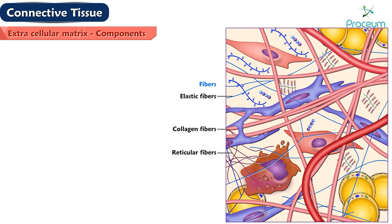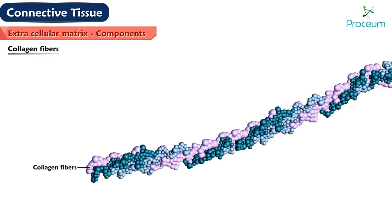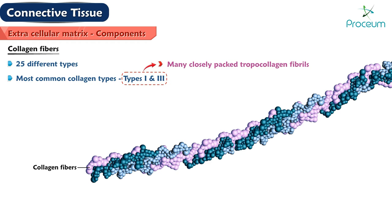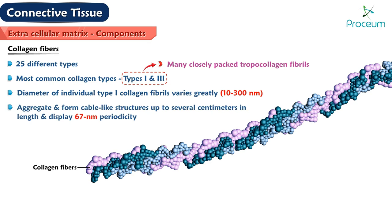Fibers — collagen, reticular, and elastic — are long, slender protein polymers present in different proportions in different types of connective tissue. Although there are at least 25 different types of collagen, the most common collagen types in connective tissue proper are types 1 and 3 collagen, both consisting of many closely packed tropocollagen fibrils.